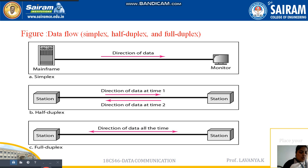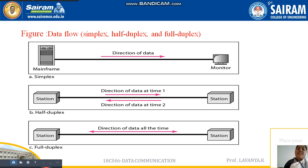The next one is data flow. Data flow describes the direction of the data — where the data is going to pass, which direction it is going to reach, and to whom the data is going to be sent. That we call it as the path. Data flow contains three things: simplex method, half duplex method, and full duplex method.